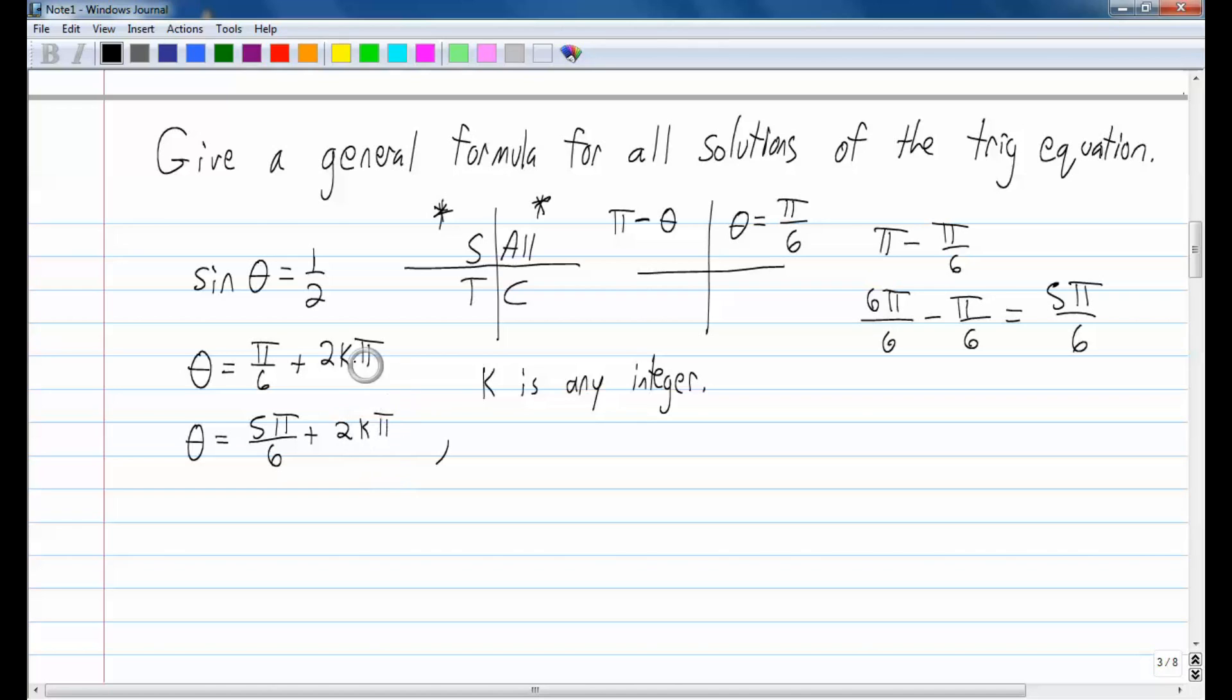That means that I can plug in a negative 1. That'll give me an angle measure that will lie in the same position as pi over 6. I could plug in a 0. That would give me my two angle measures that I come up with at first. I could plug in a 1. Then that brings me one complete revolution around, two pi radians around. So you can plug in any integer, and that would give you a set of answers or a set of angle measures that if you took the sine of them, you would get a positive 1 half.